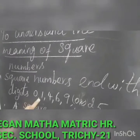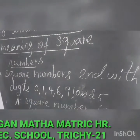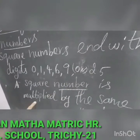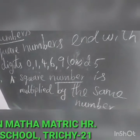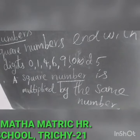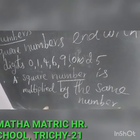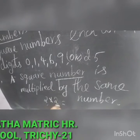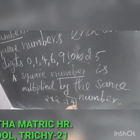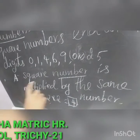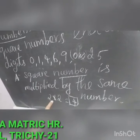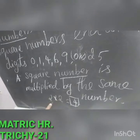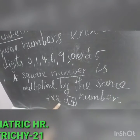The second point is: a square number is a number multiplied by the same number itself. For example, 2 multiplied by 2 gives 4. So 4 is a square number. Similarly, 2 means multiply by 2, 3 means multiply by 3.